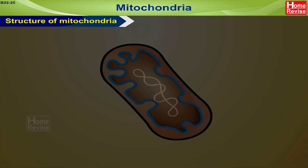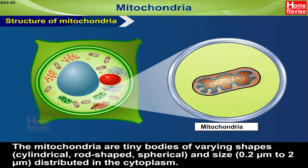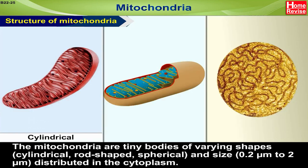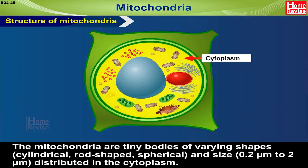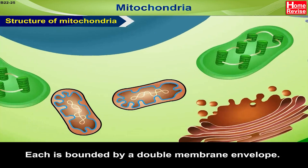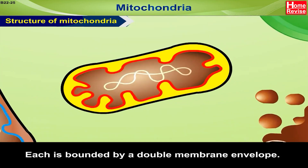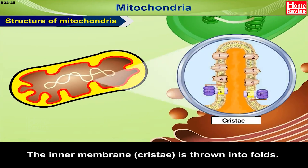Structure of Mitochondria. The mitochondria are tiny bodies of varying shapes — cylindrical, rod-shaped, or spherical — and size, ranging from 0.2 micrometers to 2 micrometers, and are distributed in the cytoplasm. Each is bounded by a double membrane envelope. The inner membrane, called Cristae, is thrown into folds.